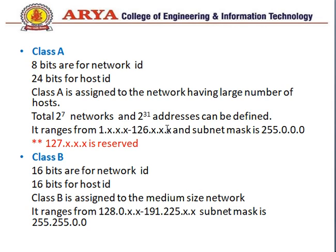The total number of addresses we can define is 2 to the power 31. Its range starts from 1 to 126, and its subnet mask is 255.0.0.0. Address 127 is reserved for the loopback address.